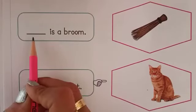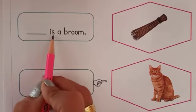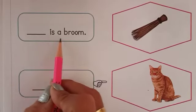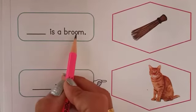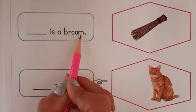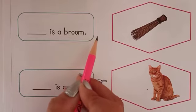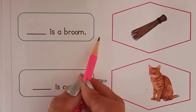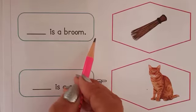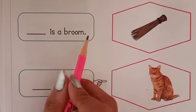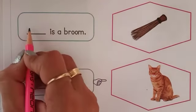Now next one: dash is a BROOM. Full stop. Any pointer there? No. That means this broom is near. So we will write 'this'.